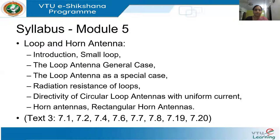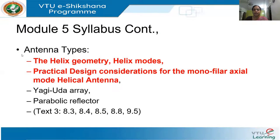A little bit of recap. The syllabus of module 5 covers loop and horn antennas and then helical antennas. In helical antennas, we're talking about helix geometry, helix mode, and the practical design considerations for the monofillar axial mode helical antenna. After that, we have the angular array and parabolic reflector. This class, we'll be talking about the helix geometry and the helix mode.